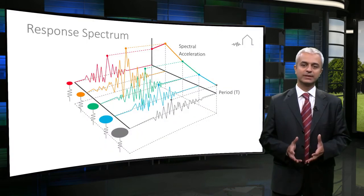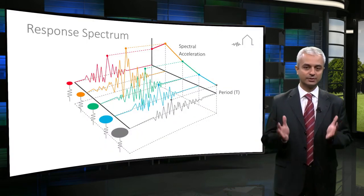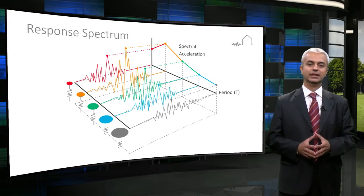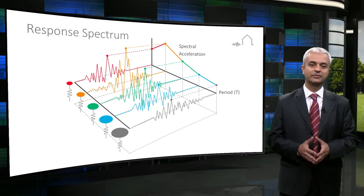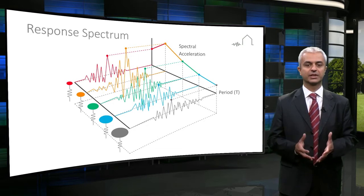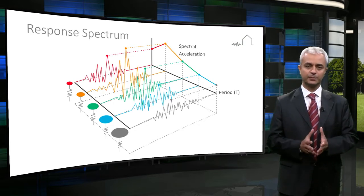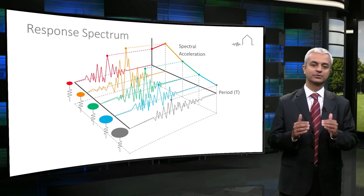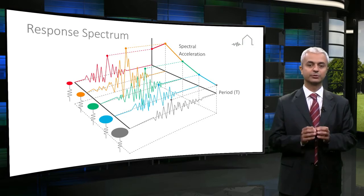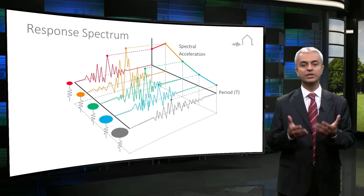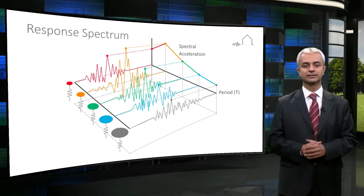Earthquakes are random events with a wide range of effects on structures. The dynamic characteristics of the structures, the local site effects, and the frequency content of the seismic ground motion influence the earthquake response of structures. A response spectrum is a tool that shows the maximum response of structures to specific earthquake records and gives a general view to understand which type of structures are mostly affected.